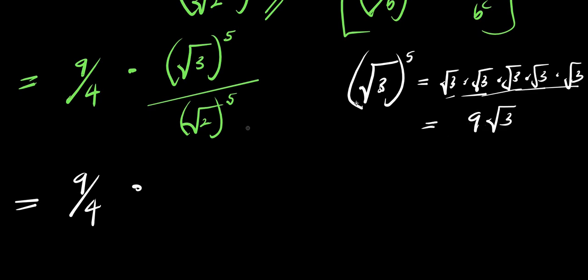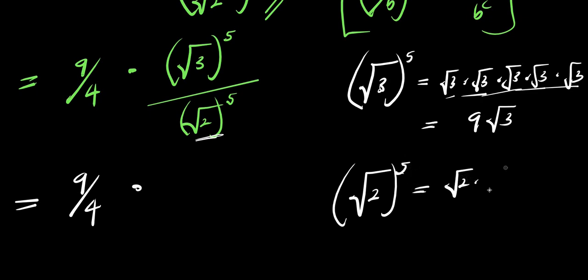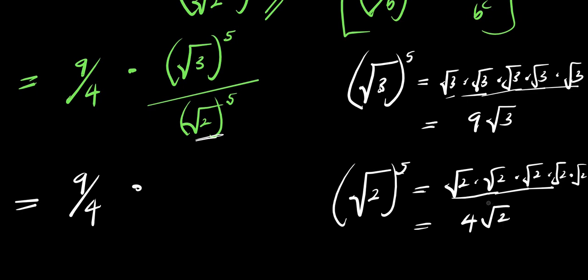The next thing will be to consider root 2 raised to the power of 5. Root 2 to the 5 equals root 2 times root 2 times root 2 times root 2 times root 2. Root 2 times root 2 is root 4, and root 4 is 2. Then 2 times root 2, times root 2, gives 2 root 4, and 2 root 4 is 2 times 2 equals 4, times root 2. So root 2 to the 5th power equals 4 root 2. This gives us 9 root 3 divided by 4 root 2.